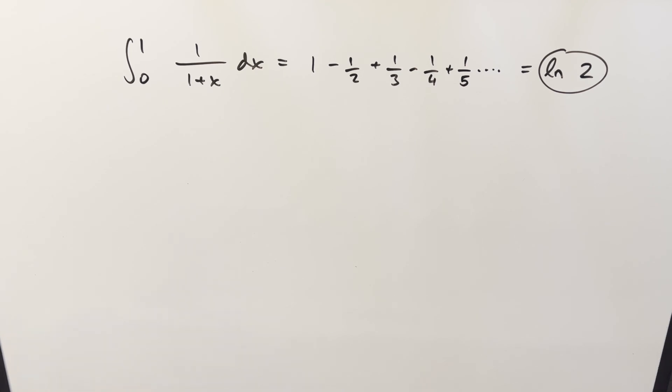Okay, we have something interesting here today. We've got the integral from 0 to 1 of 1 over 1 plus x dx. And what I want to show is this integral is actually the same thing as the alternating harmonic series, which has the value of natural log of 2.